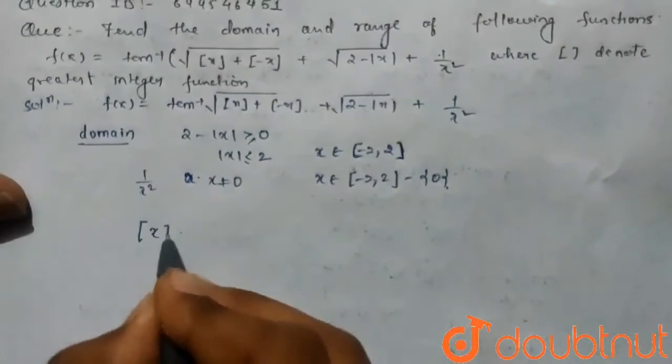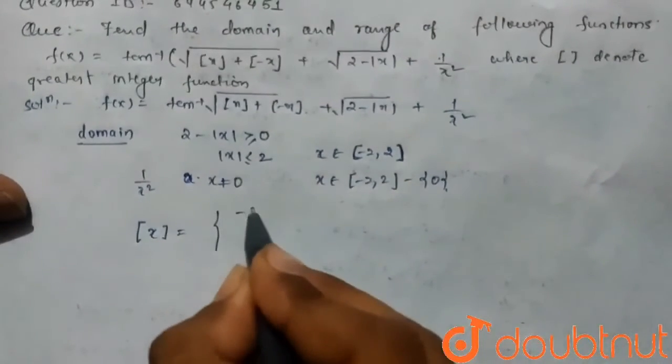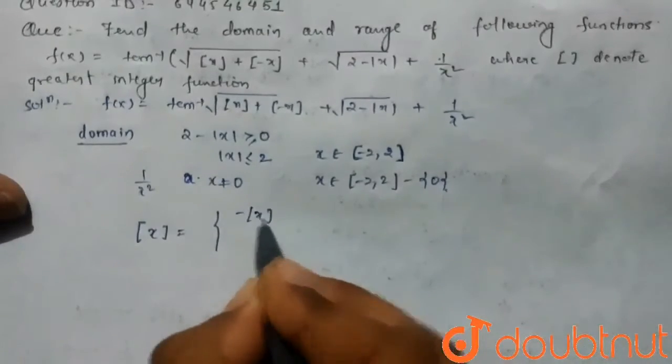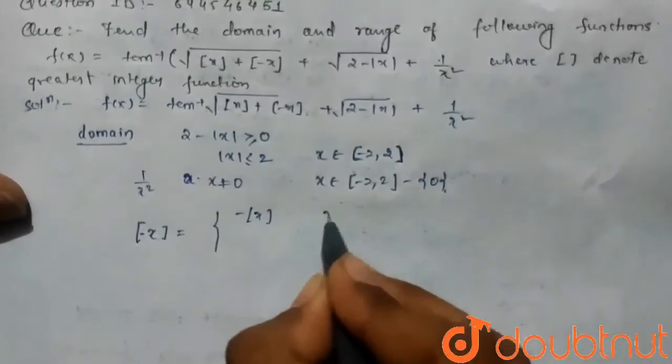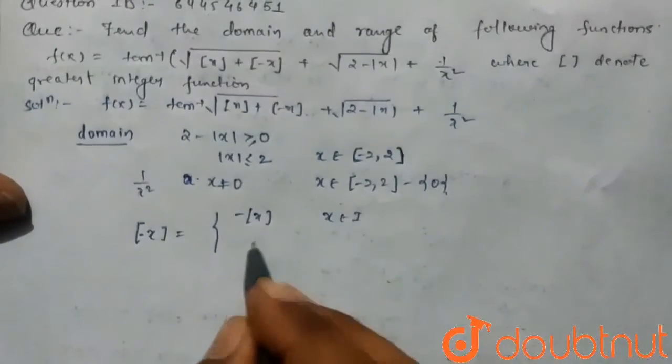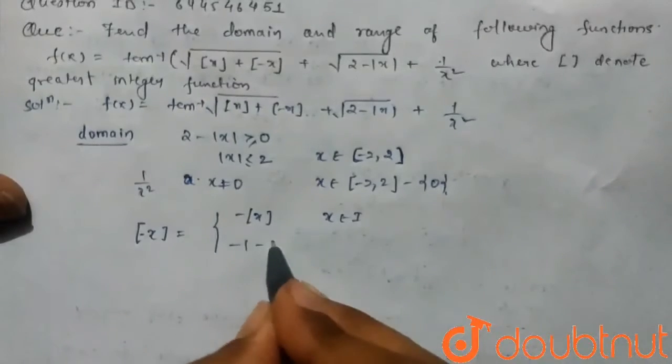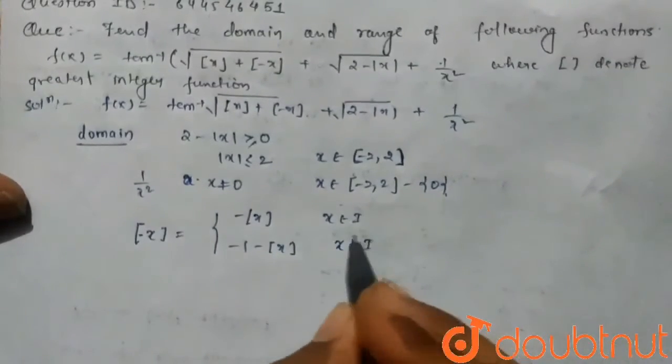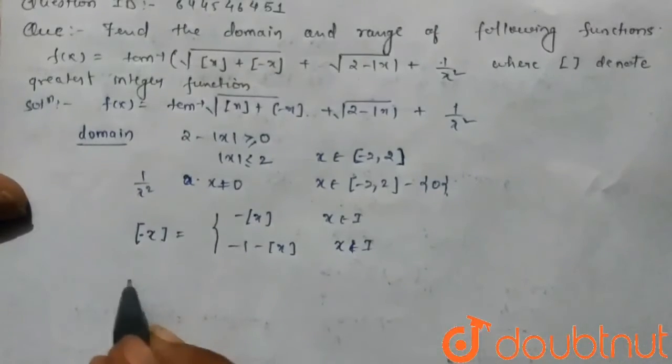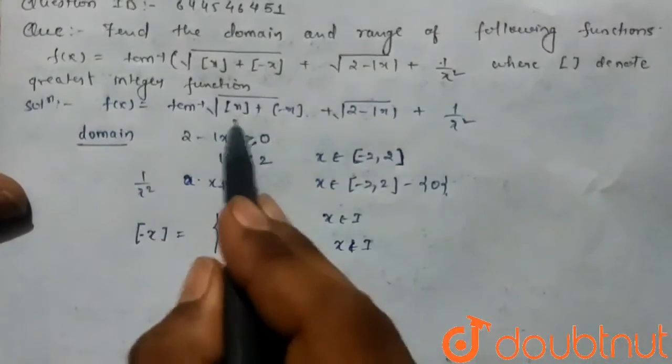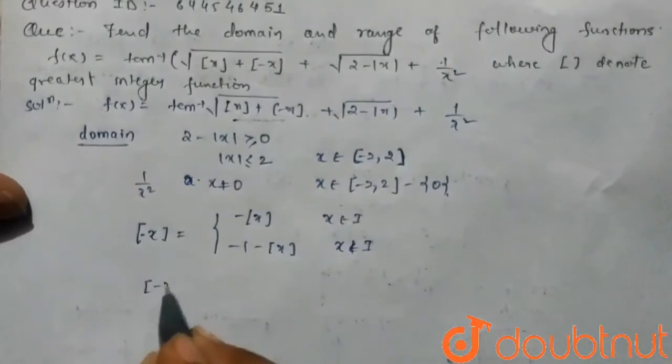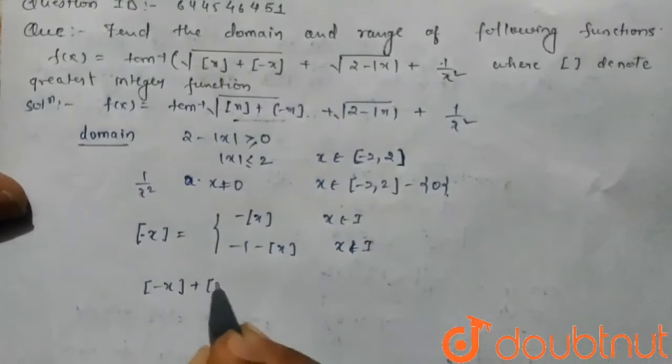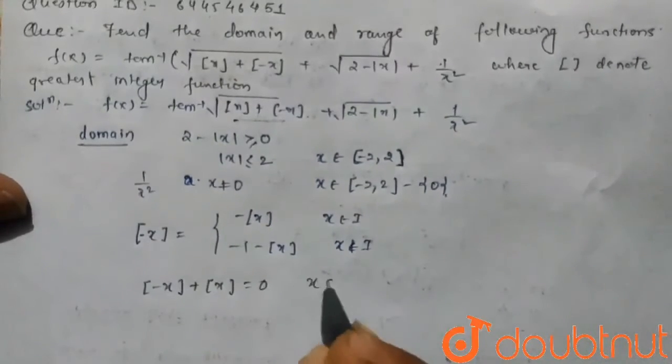The greatest integer function of x equals minus of minus of x where x belongs to integer, and minus one minus of x when x belongs to non-integer.